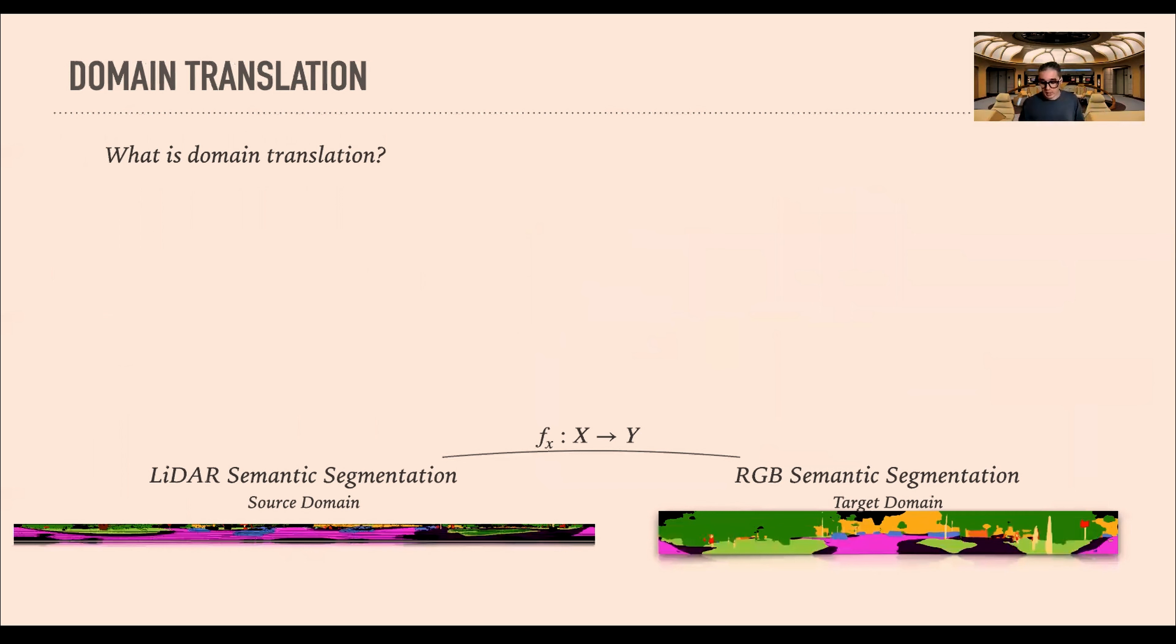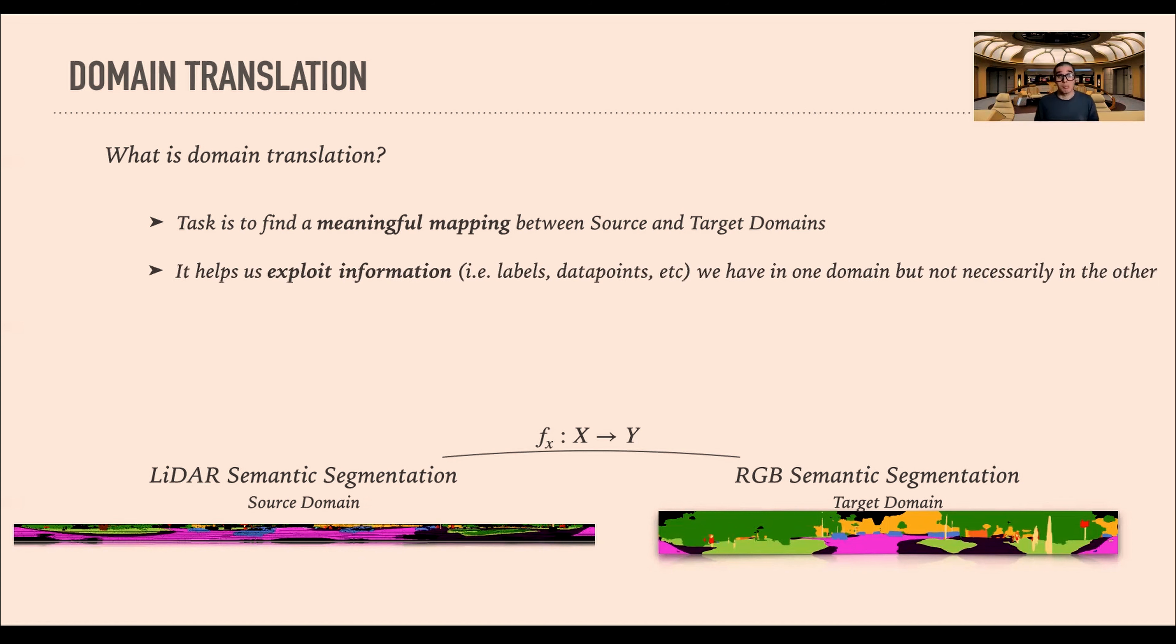Just to give a quick explanation of what is domain translation. Domain translation is a task to find a meaningful mapping between two different domains. In our case, we have the domain of the LIDAR, our source domain, and we need to find a mapping, a function that can transform it to be realistic, like it was coming from another domain. In this case, the RGB semantic segmentation, our target domain. In our case, we are following a supervised approach.